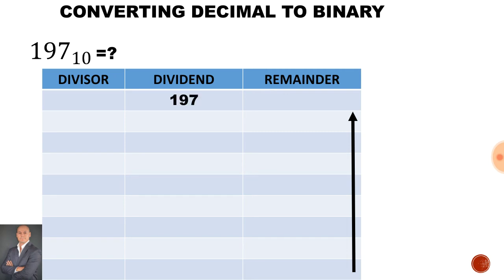Our dividend is 197 and because we are dealing with binary, the divisor will always be 2. Now if you notice, 197 ends with an odd number so this tells me there will be a remainder. 197 cannot divide perfectly into two parts, therefore 2 goes into 197 98 times with a remainder of 1. If I want to double check my answer I can say 98 times 2 is 196 plus 1 will give me 197.